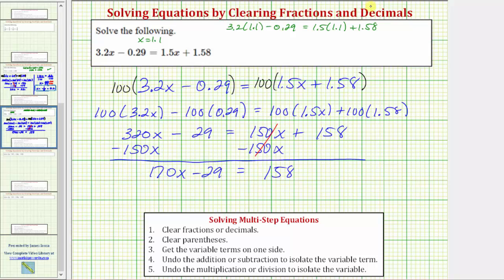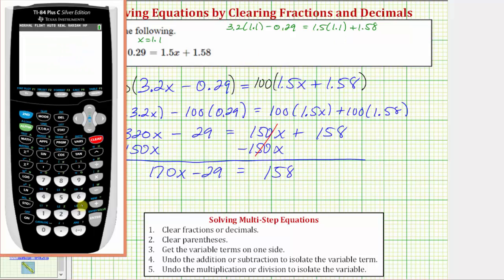To check our solution, we need to verify the left side of the equation is equal to the right side, and we'll do this using the calculator. On the left, we have 3.2 times 1.1 minus 0.29, which is equal to 3.23, and now let's make sure we have 3.23 on the right as well. We have 1.5 times 1.1 plus 1.58,